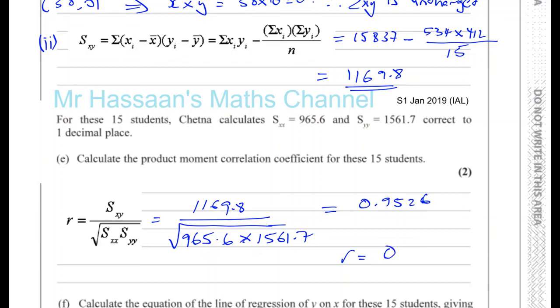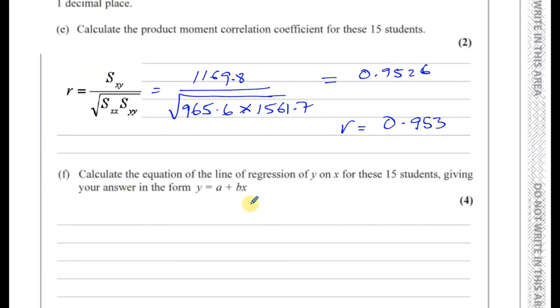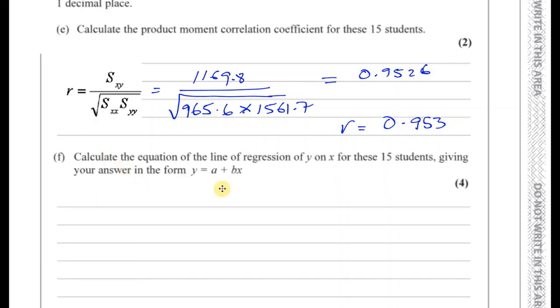We could give it to one decimal place, as these were given to one decimal place. You could write it as 0.95. It would be almost 1, very close to 1. Calculate the equation of the regression line of Y on X for these 15 students, giving your answer in the form Y equals A plus BX. I'll do this in the next video.